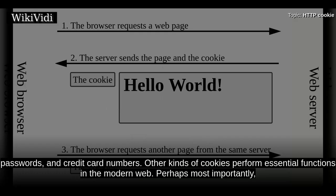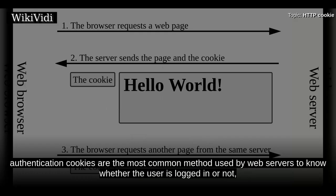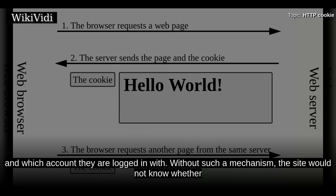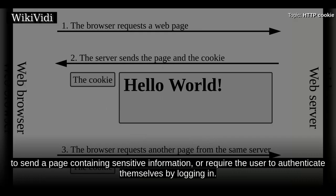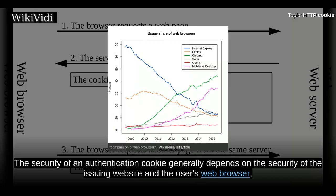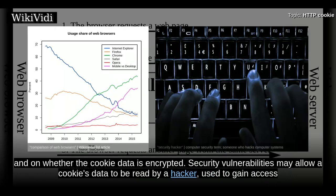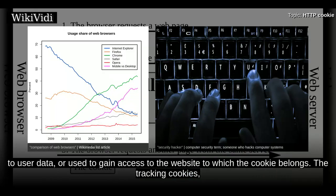Other kinds of cookies perform essential functions in the modern web. Perhaps most importantly, authentication cookies are the most common method used by web servers to know whether the user is logged in or not, and which account they are logged in with. Without such a mechanism, the site would not know whether to send a page containing sensitive information, or require the user to authenticate themselves by logging in. The security of an authentication cookie generally depends on the security of the issuing website and the user's web browser, and on whether the cookie data is encrypted. Security vulnerabilities may allow a cookie's data to be read by a hacker, used to gain access to user data, or used to gain access to the website to which the cookie belongs.